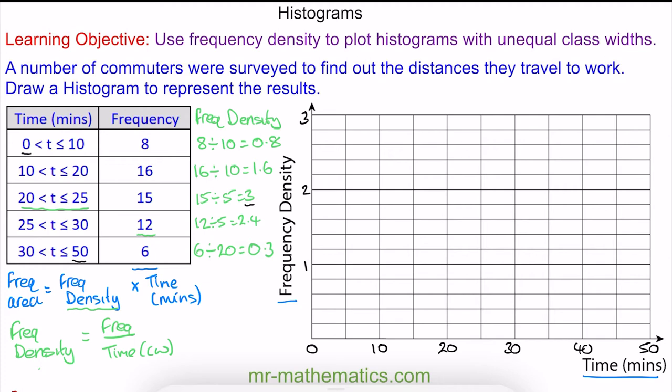Now I can begin to draw our bars. Our first bar is a frequency density of 0.8 and a class width of 10 starting from 0. Our second bar goes from 10 to 20 with a frequency density of 1.6.